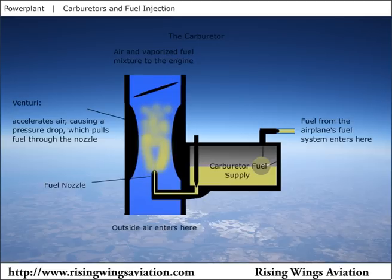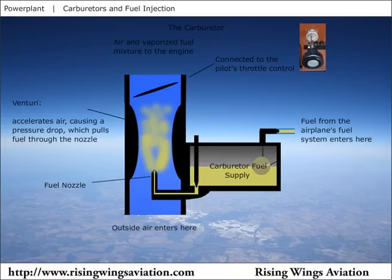The fuel-air mixture encounters a throttle valve inside the carburetor. The pilot manipulates the position of the throttle valve to adjust the engine's power. At idle power, the valve is nearly closed, greatly restricting the flow of fuel and air to the engine. At full power, the valve is completely open.